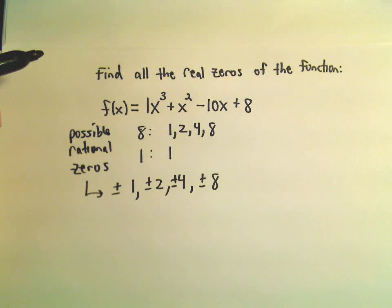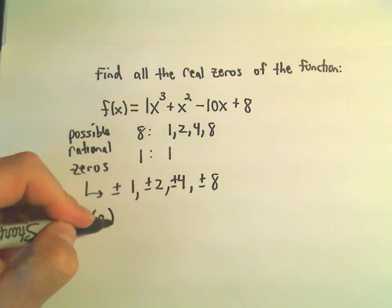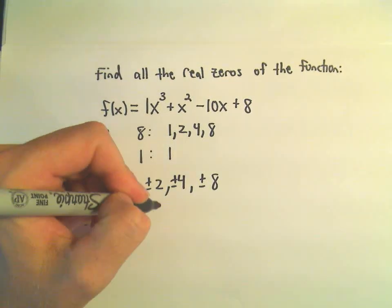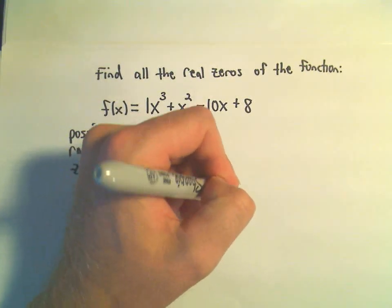So at this point, what I'm going to use is the remainder theorem. Because if we plug, remember, if f of a, if we plug some number into our function and we get 0 out, that tells us that x minus a is a factor.